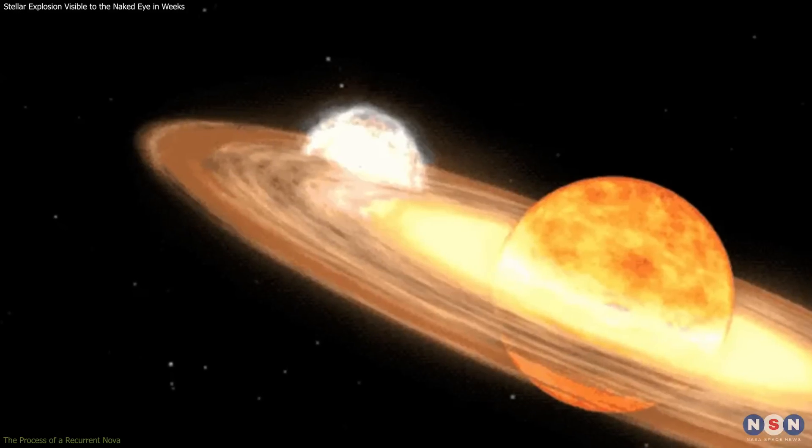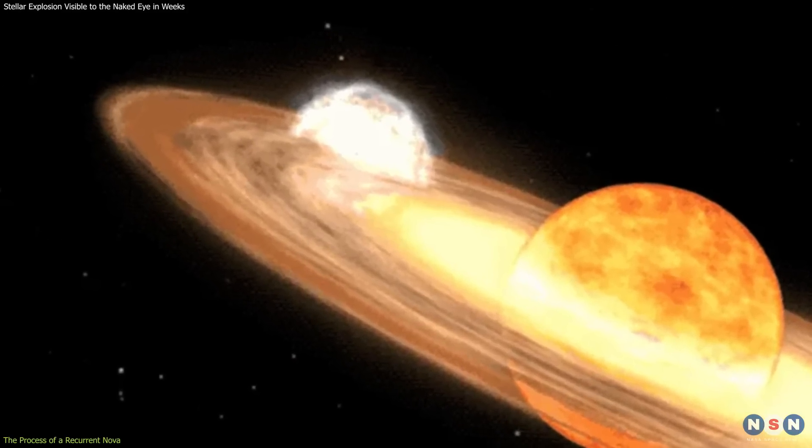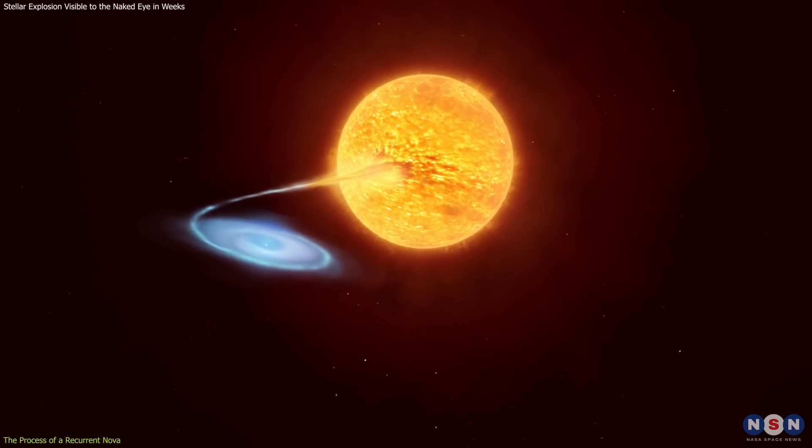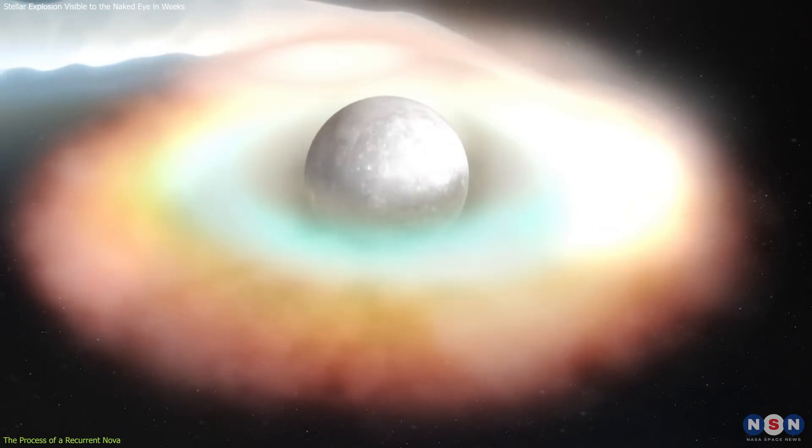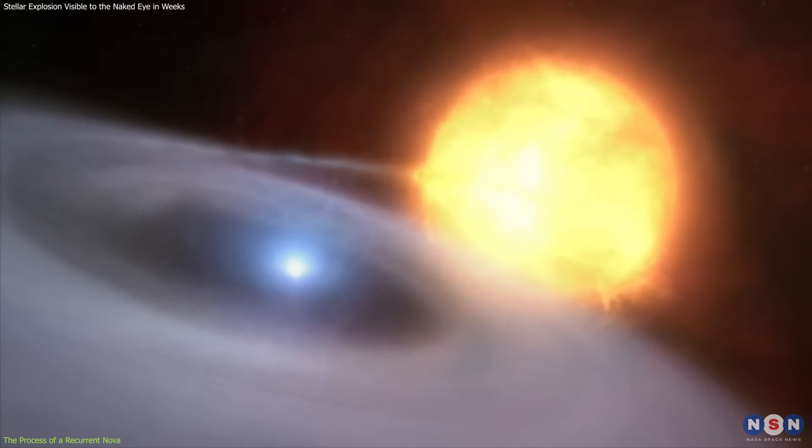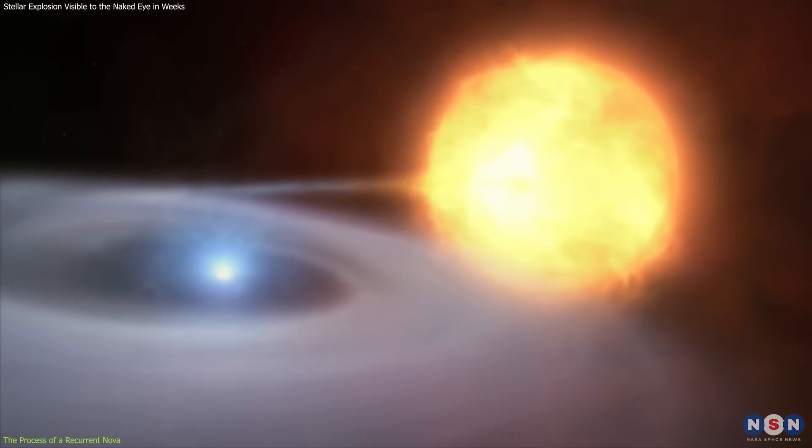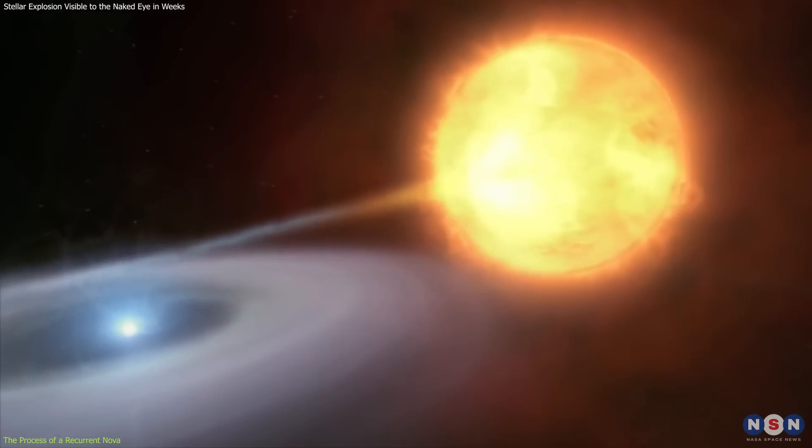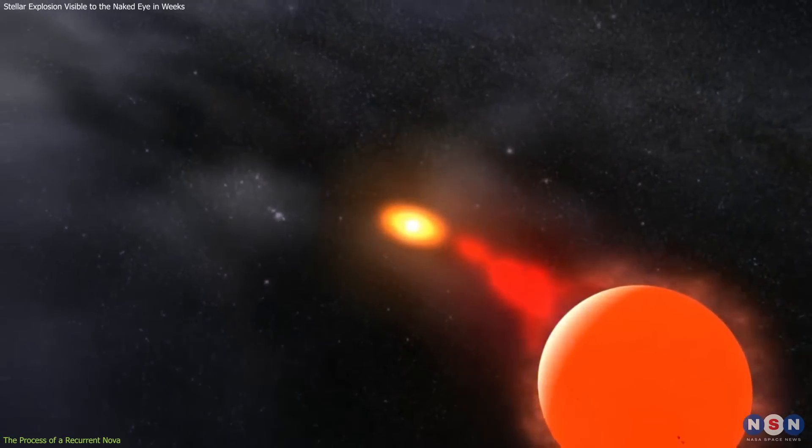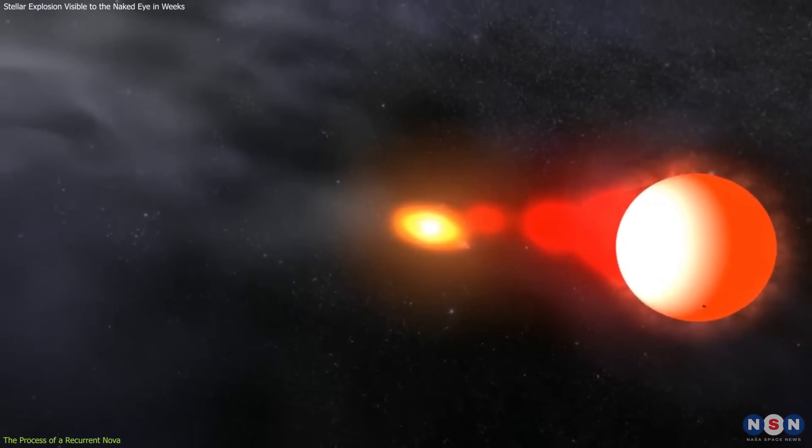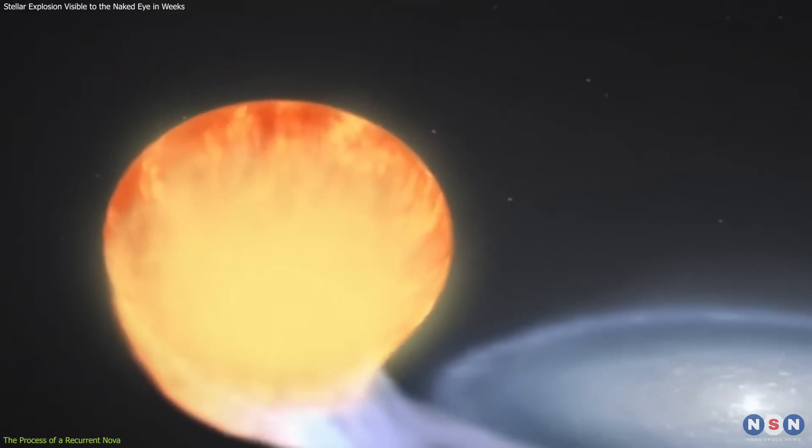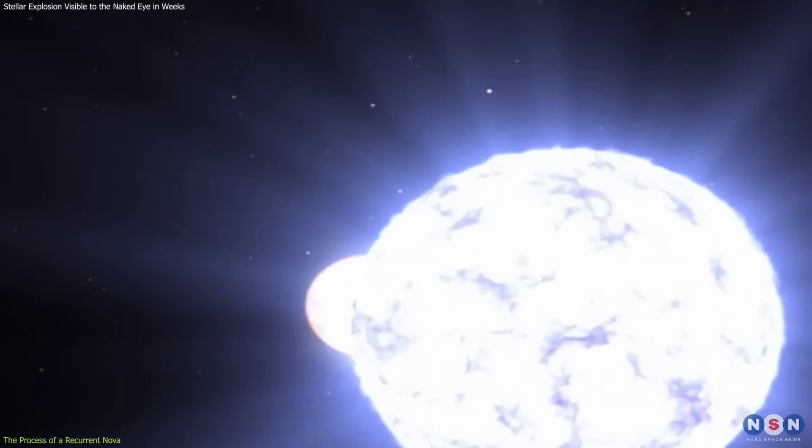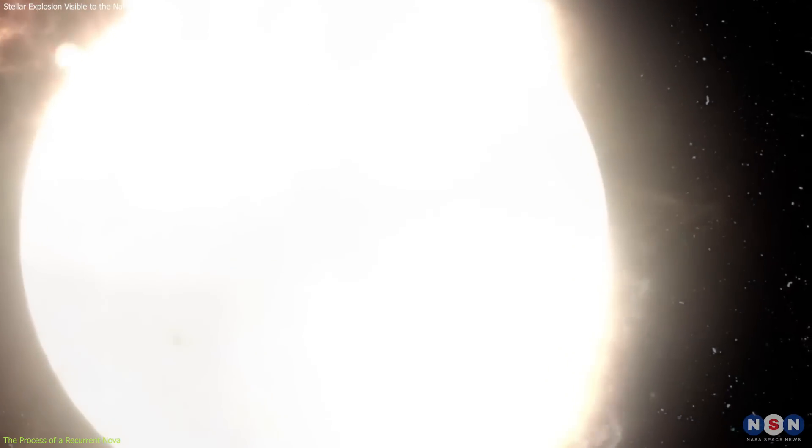The recurrent nova phenomenon observed in TCRB is a spectacular display of cosmic forces at work. The process begins with the white dwarf's strong gravitational pull, which allows it to accrete material from its companion star's outer atmosphere. Over decades, this material, primarily hydrogen, accumulates on the surface of the white dwarf. When the layer of hydrogen becomes dense and hot enough, it undergoes a thermonuclear runaway, leading to a sudden and intense release of energy that causes the system to brighten dramatically.